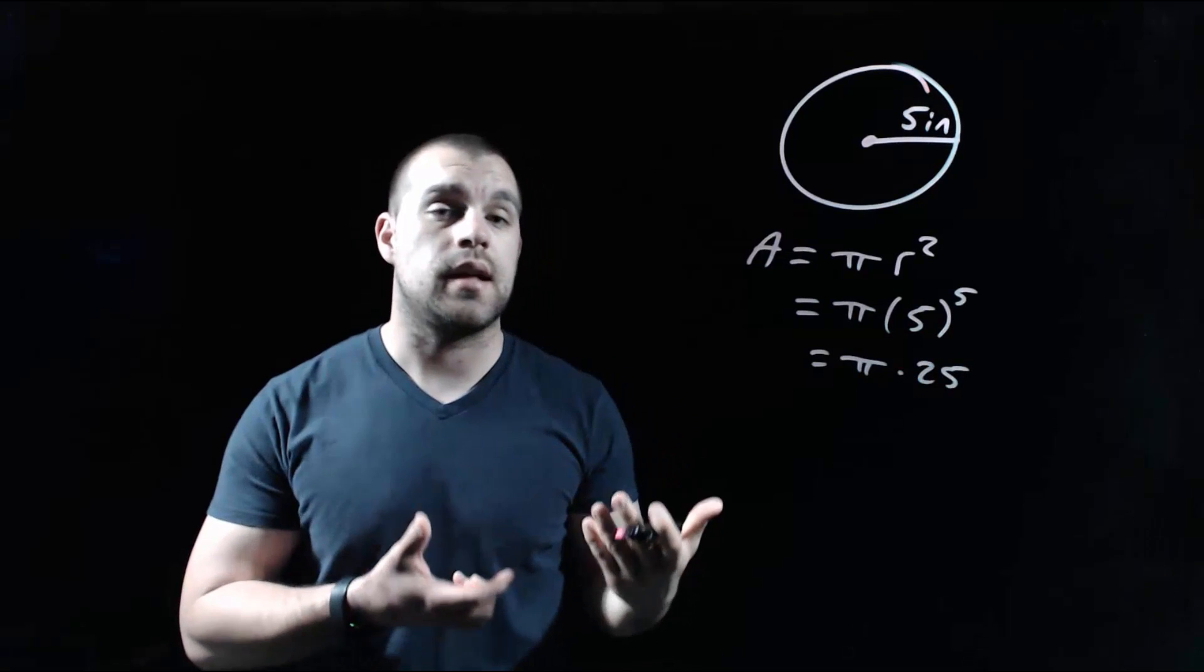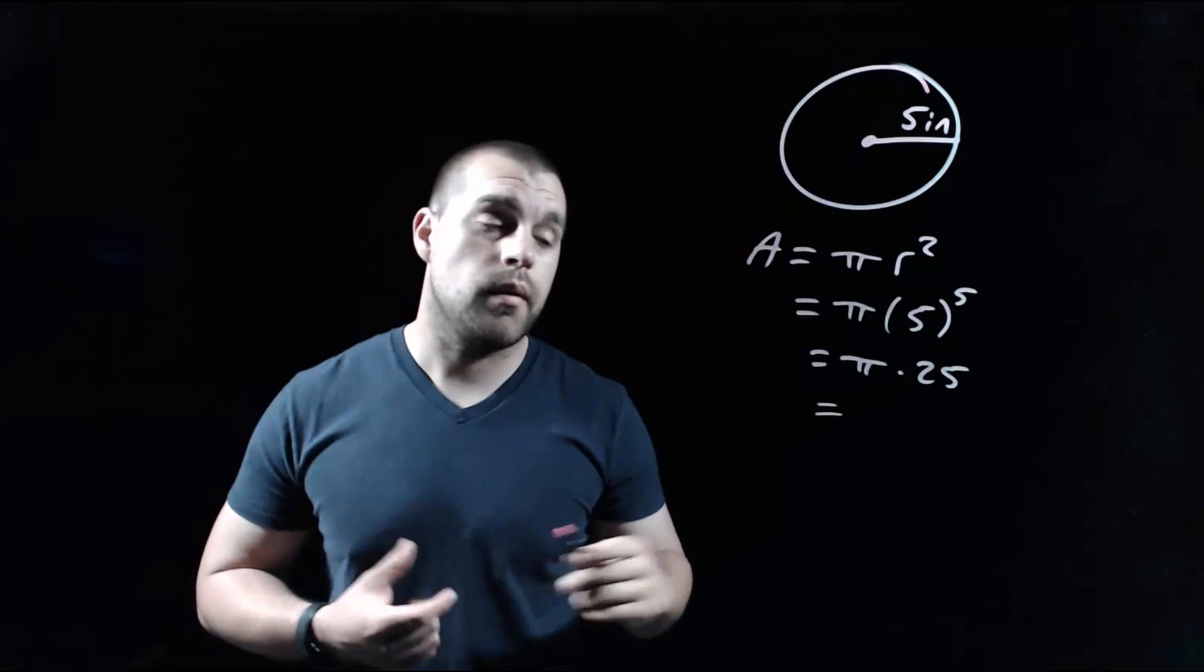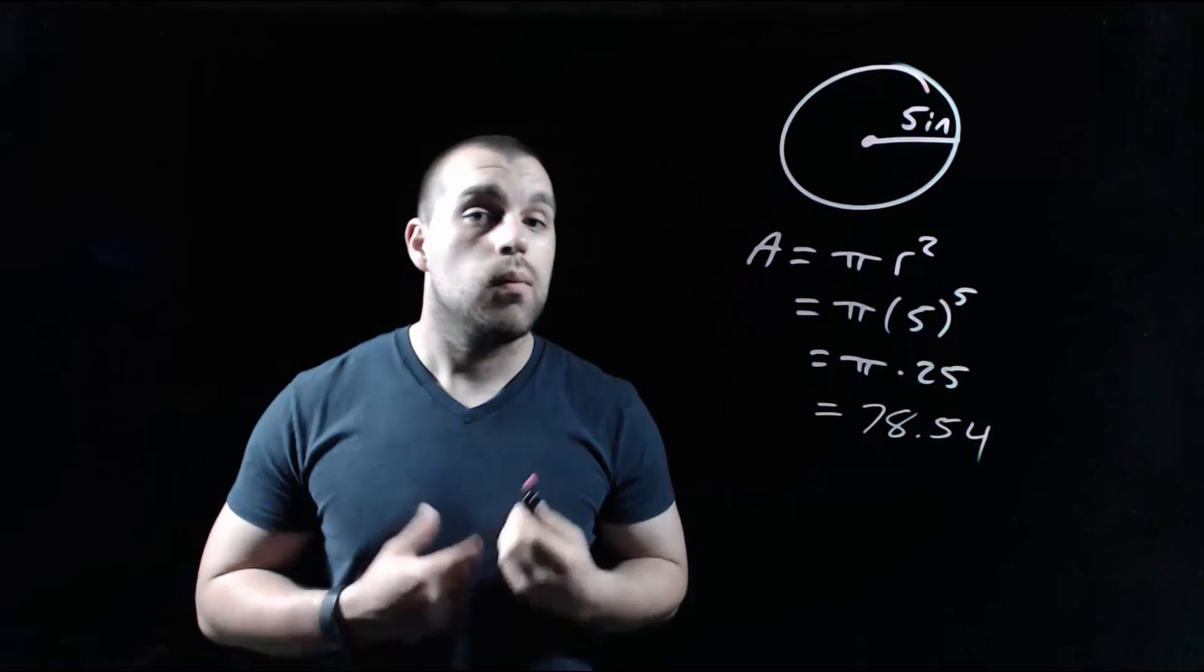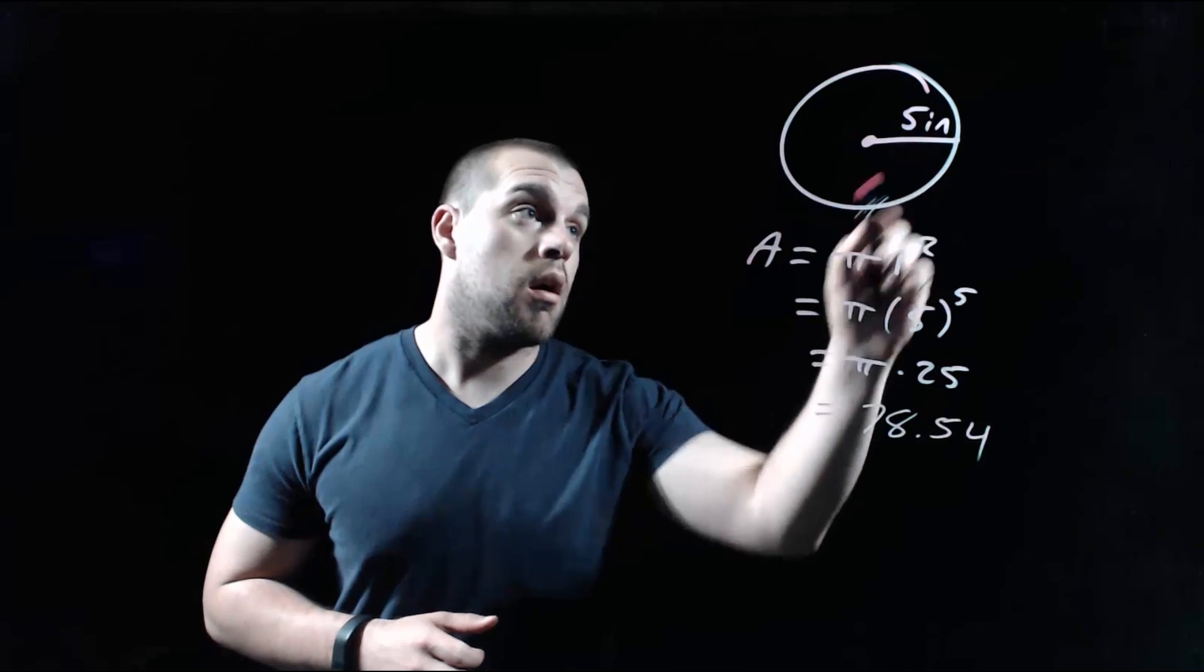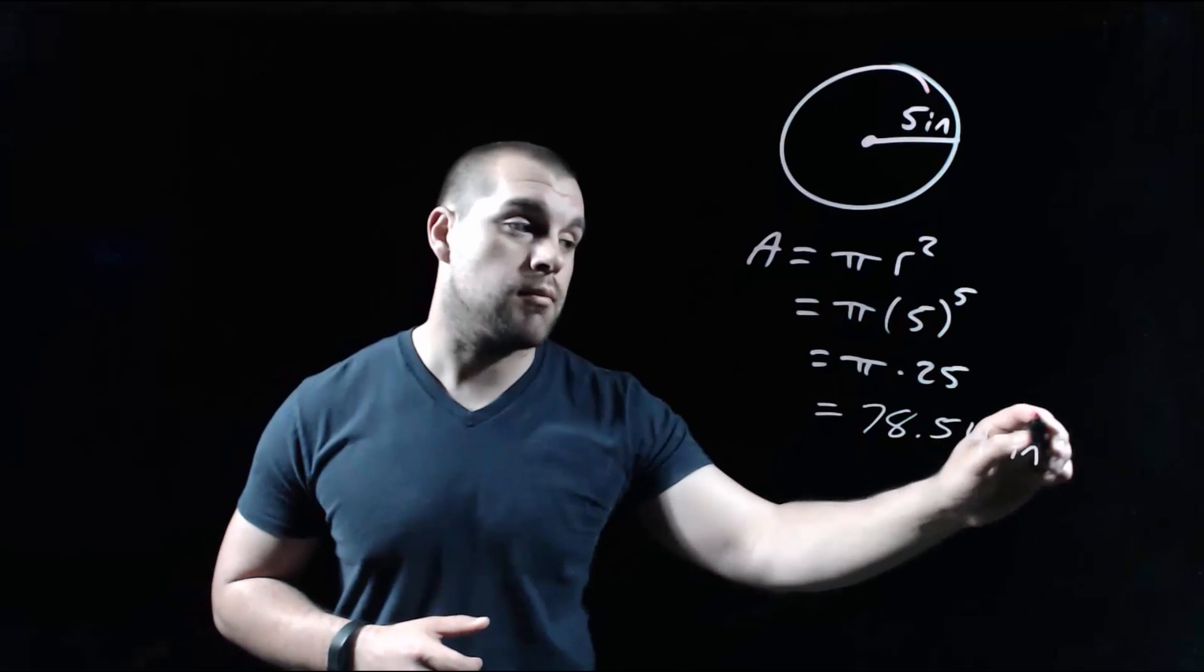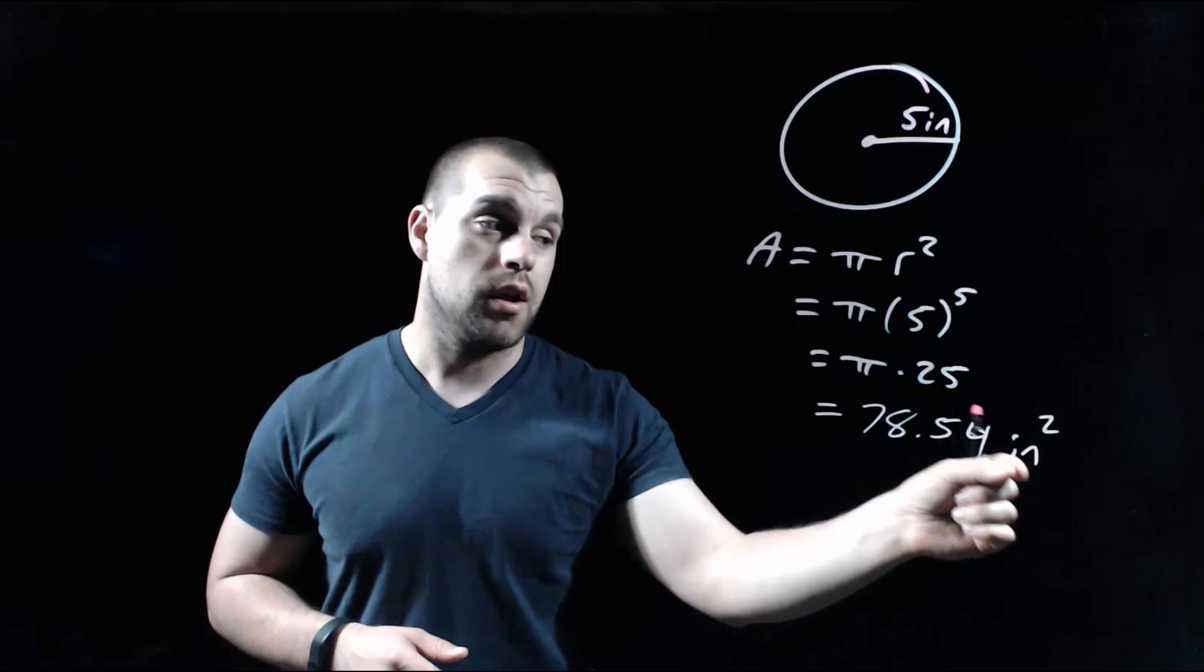Now that would be our exact answer, but if we wanted to get a decimal approximation, then we would want to type this into our calculator. And when we do that, we get about 78.54. We do need to put a label on this since this is a measurement. We were measuring our radius in inches, but because this is an area problem, we need to put a squared on that label. So it's 78.54 inches squared.